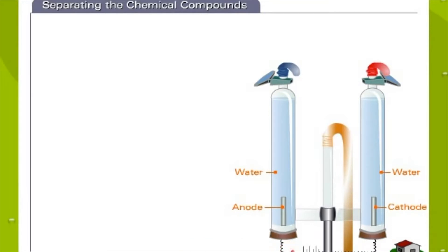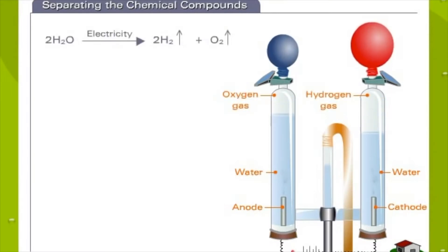When an electric current passes through two tubes full of water, it breaks the tight bonds between the hydrogen and oxygen atoms in each water molecule. Oxygen atoms bubble up to fill the blue balloon, while hydrogen atoms fill up the red balloon. There are two hydrogen atoms for every atom of oxygen in a water molecule H2O.